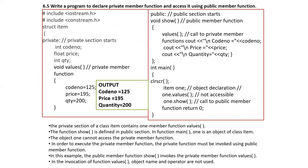Here is an example: a private member function is used along with private variables. The public member function calls the private member function. This is another way of accessing private data by using the public member function.